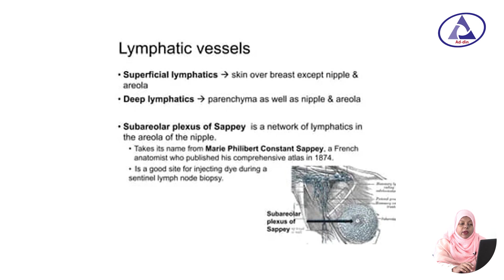There is another type called the subareolar plexus of Sappey. It is a network of lymphatics in the areola of the nipple, named after Marie Philibert Constant Sappey, a French anatomist who published his comprehensive atlas in 1874. This is a good site for injecting dye during a sentinel lymph node biopsy.